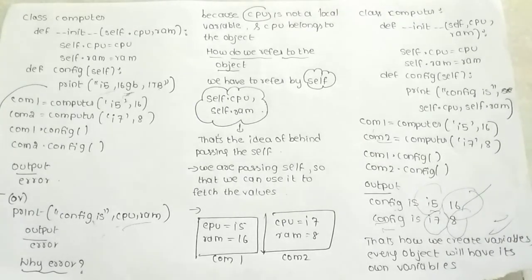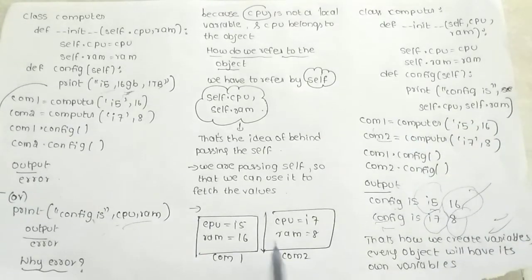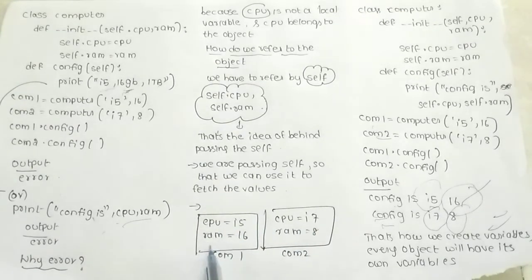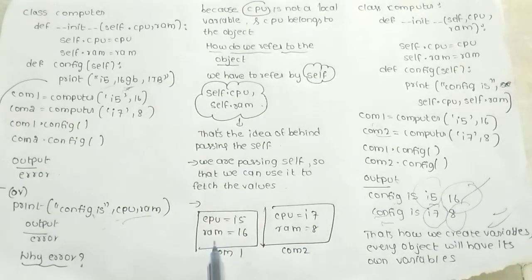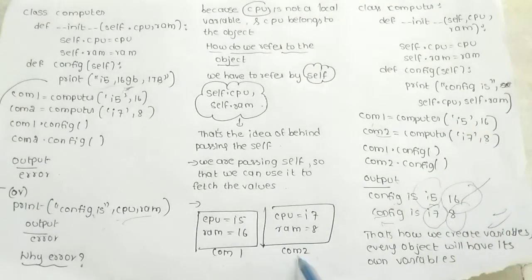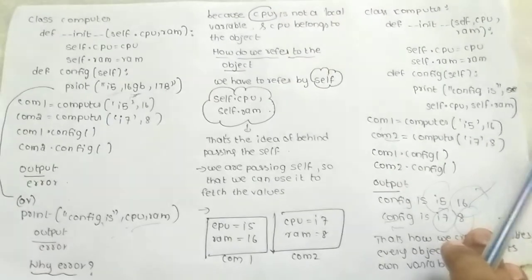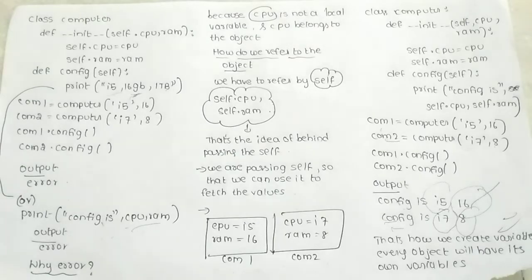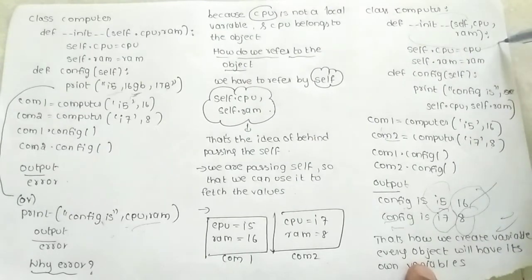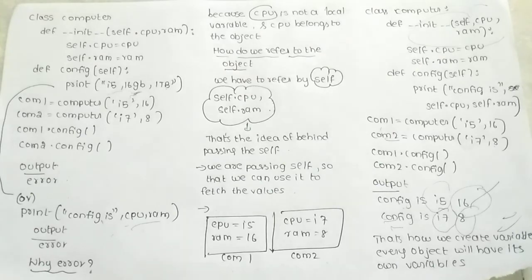Now we have the correct output displayed. Overall, we have two objects: comp1 and comp2. Each has two variables and their values. CPU is equal to i5 and RAM is equal to 16 for comp1. CPU is i7 and RAM is equal to 8 for comp2. We use the init method to initialize these values. Thank you for watching my tutorial.